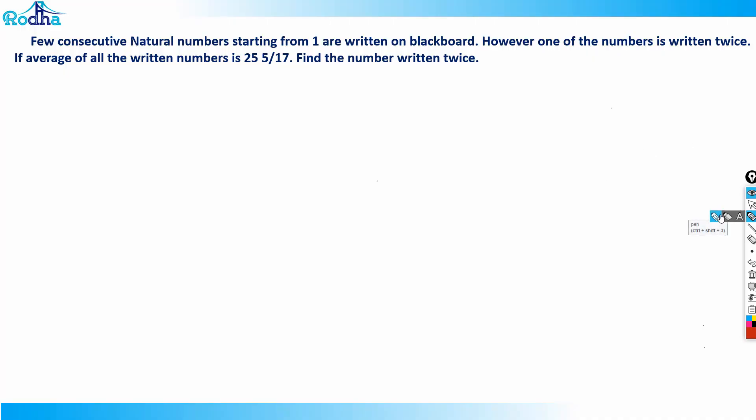Look at this question — it's a fantastic concept. Few consecutive natural numbers starting from one are written on a blackboard, and one of the numbers is written twice. If the average of all the written numbers is 25 and 5/17 — read this as a mixed fraction, 25 5/17 — find the number written twice.